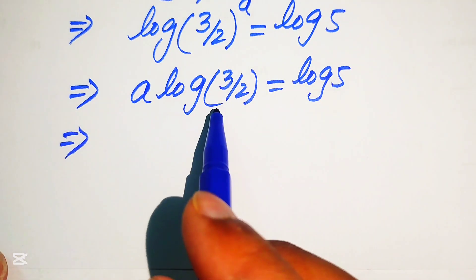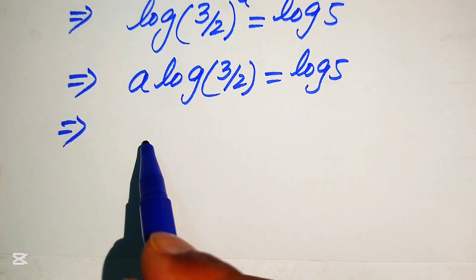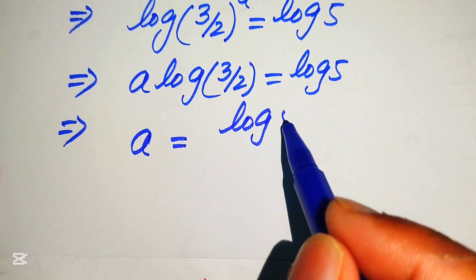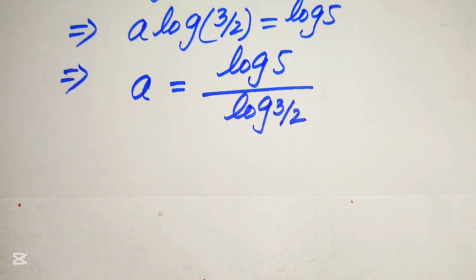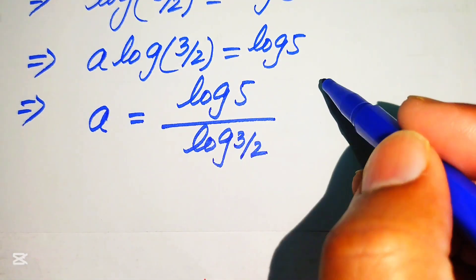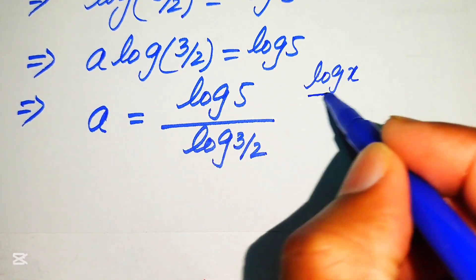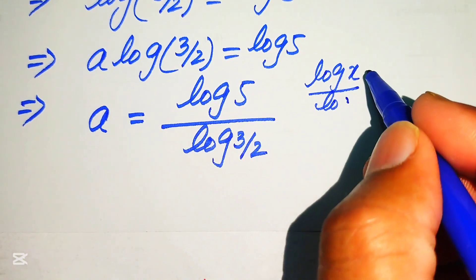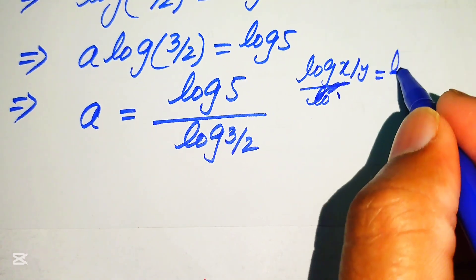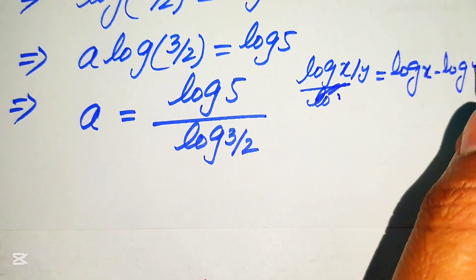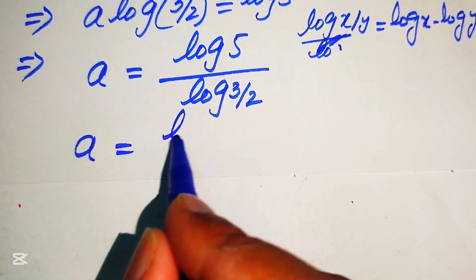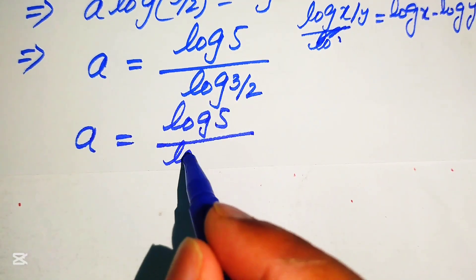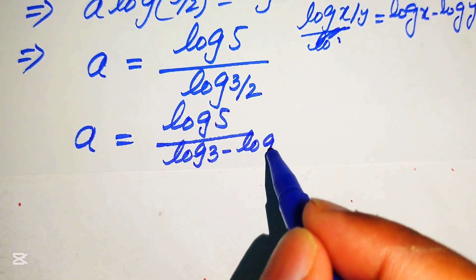We move log(3/2) to the right hand side, so a equals log 5 divided by log(3/2). We then apply the logarithmic property in the denominator: log of x over y equals log x minus log y. According to this property, a equals log 5 divided by log 3 minus log 2.